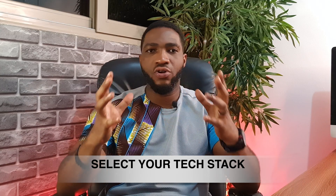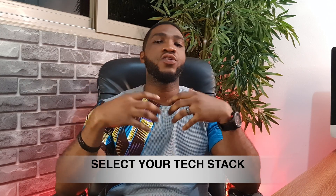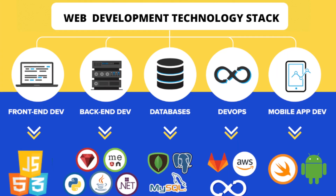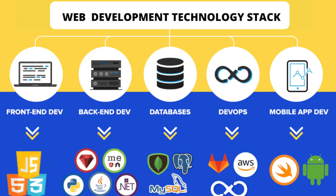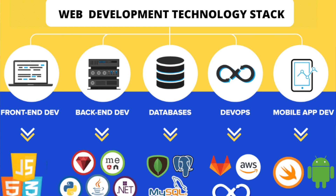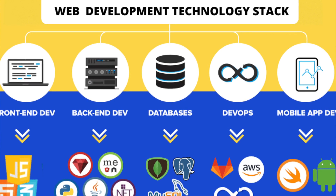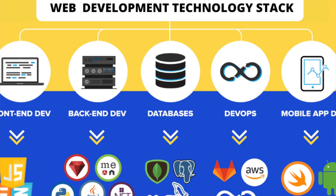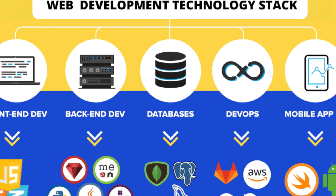Next is to select your technology stack. For the non-techies, a technology stack — sometimes called a solution stack, technology infrastructure, or data ecosystem — is very simply a list of all the technology services used to build and run one application. For example, Facebook, now Meta, is composed of a combination of coding frameworks and languages including JavaScript, HTML, CSS, PHP, and ReactJS. This would be Meta's tech stack.